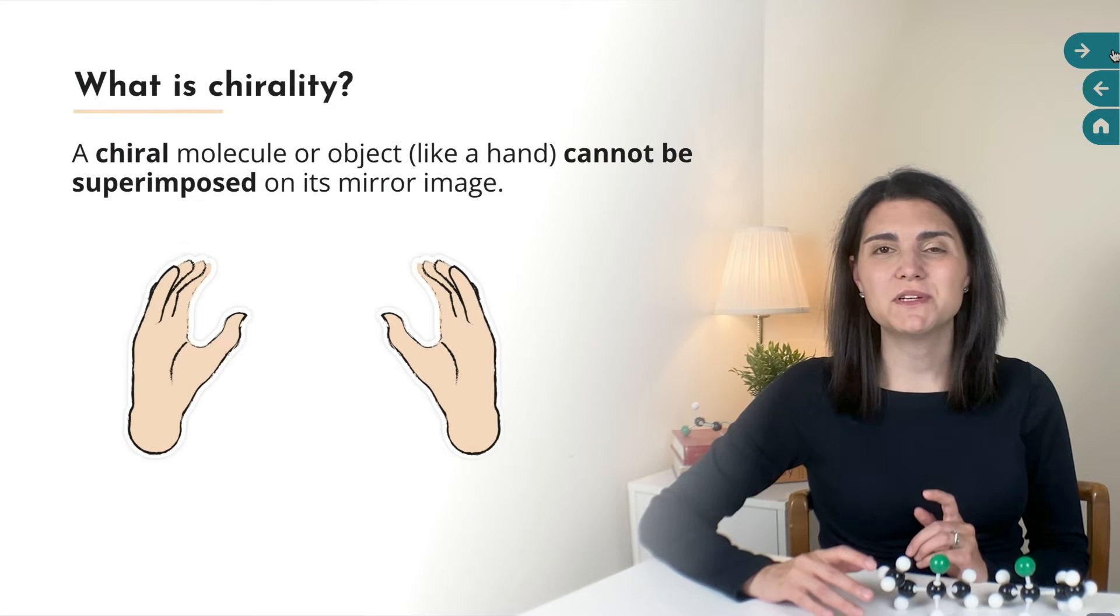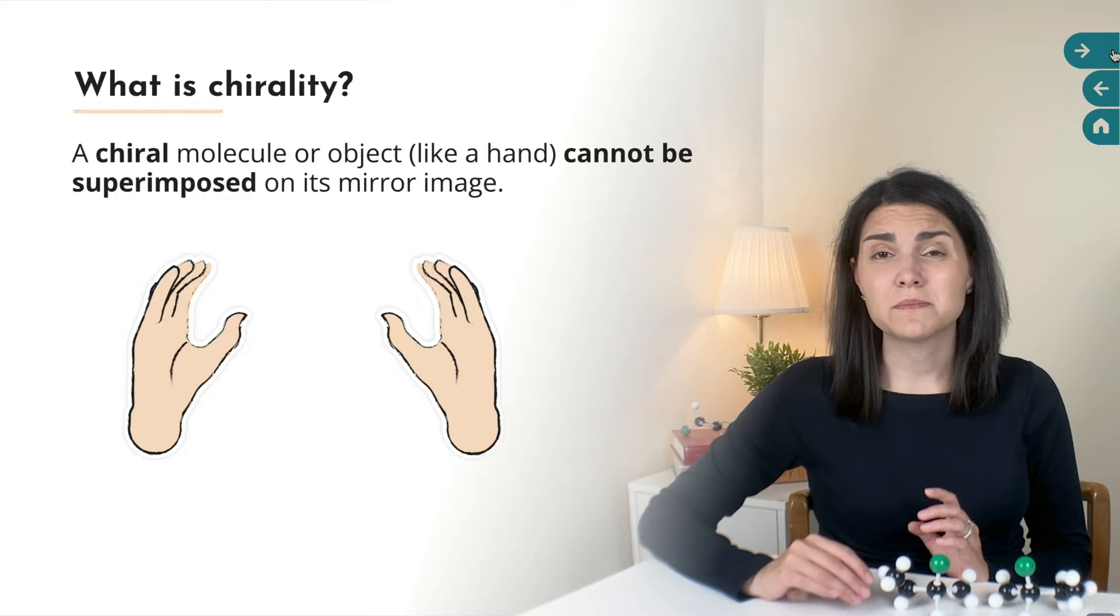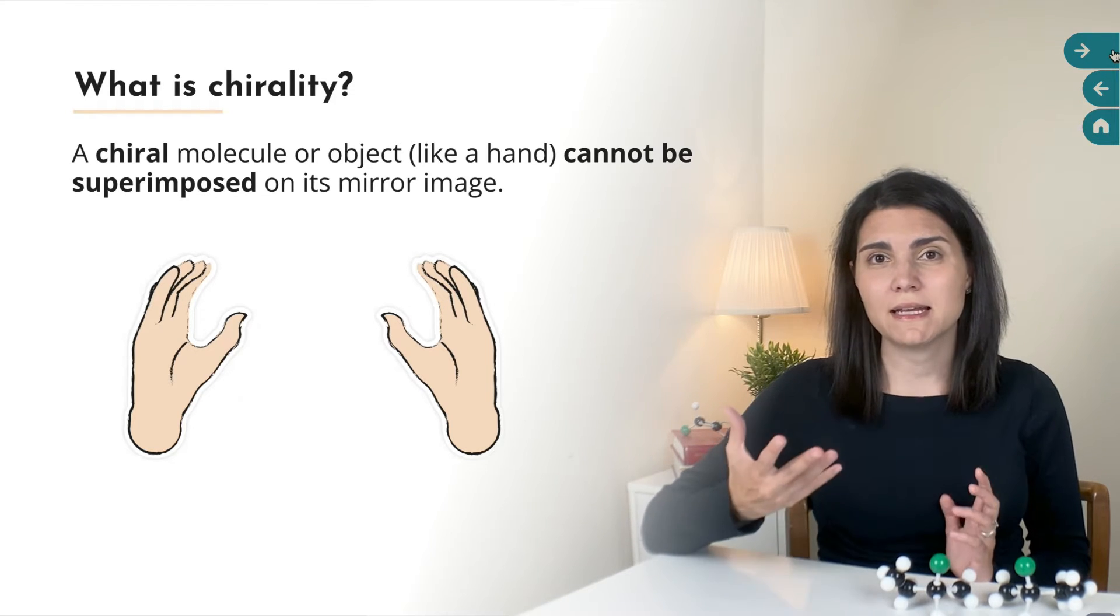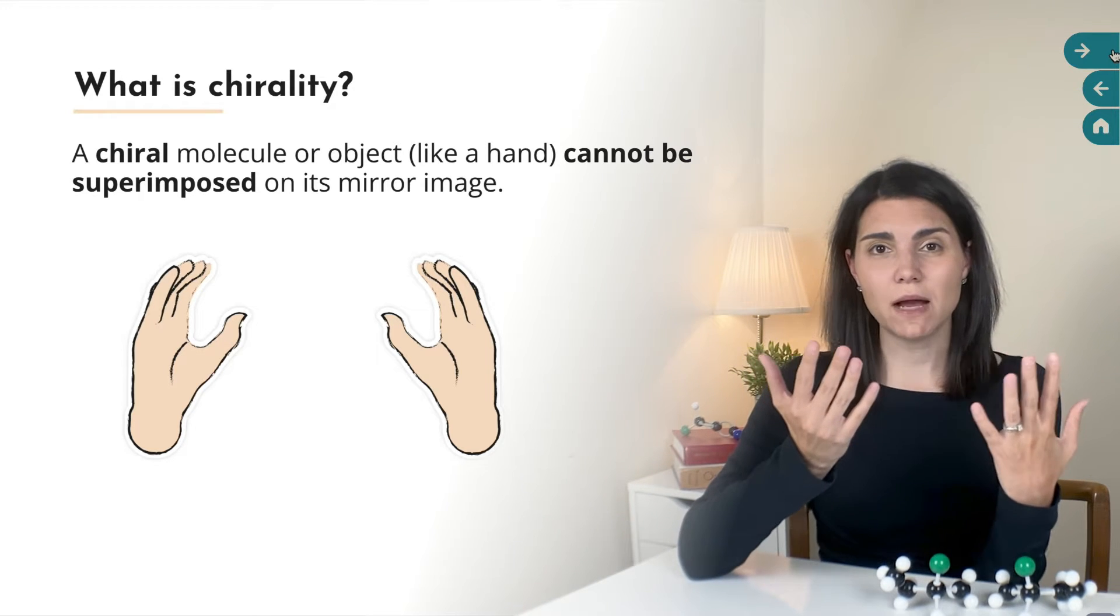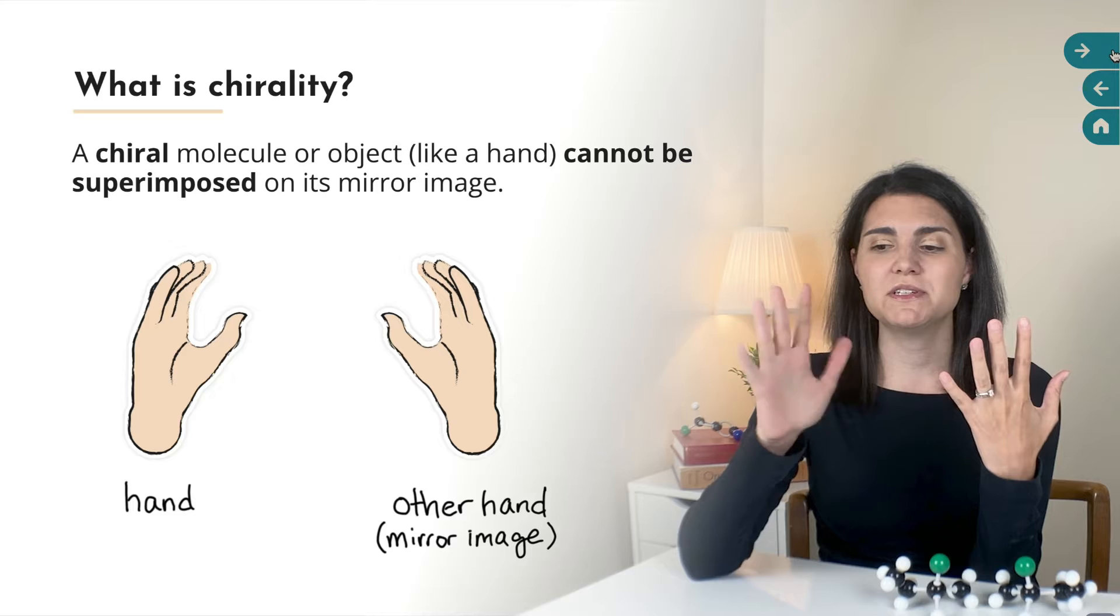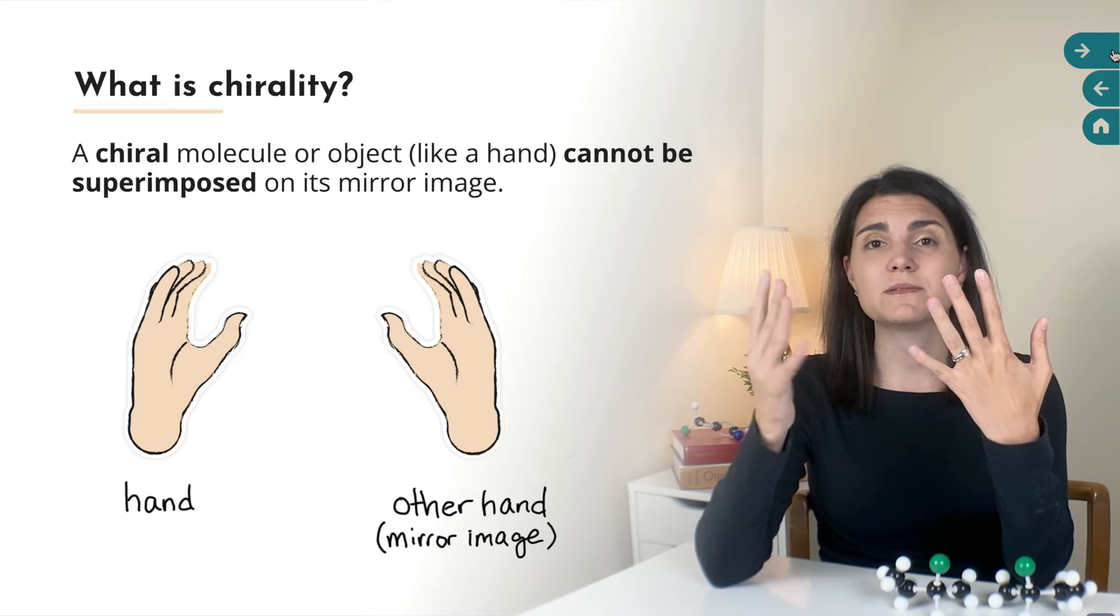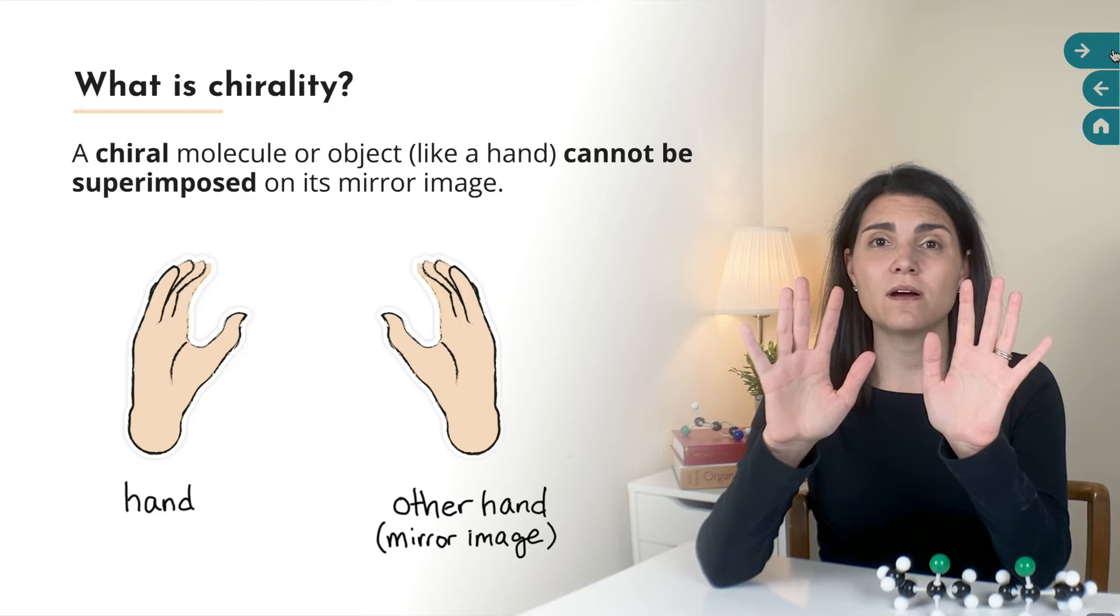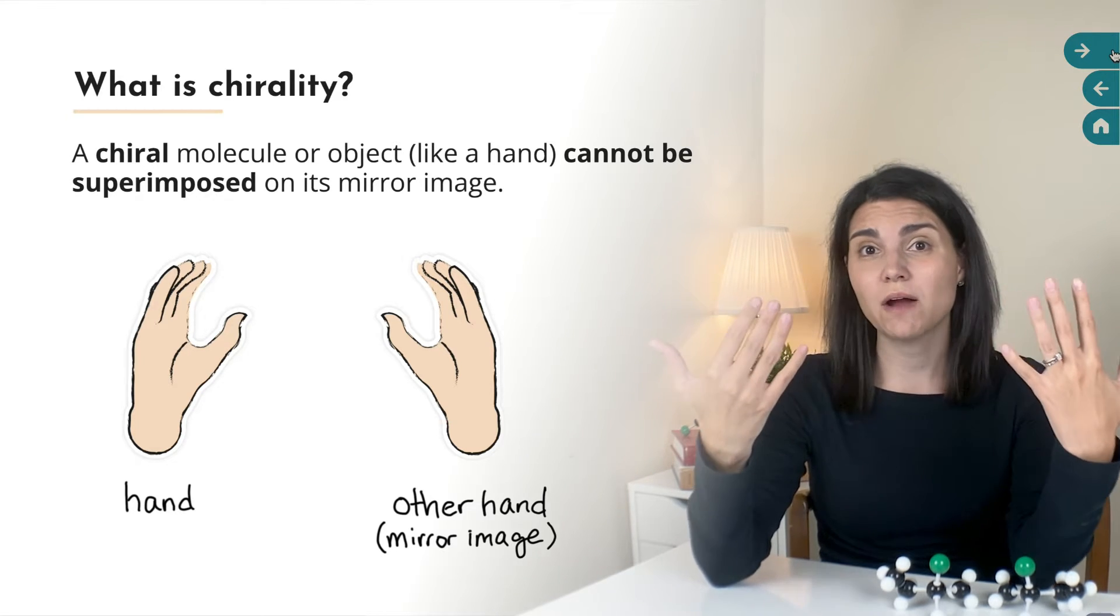A chiral object is an object that is not identical to its mirror image. The word chiral comes from a Greek word that means handed probably because a hand is a really good example of an object that is chiral. So my hands are mirror images of one another. There's no way that I can superimpose one of my hands perfectly on the other hand. They're not identical but they are mirror images and so hands are chiral.